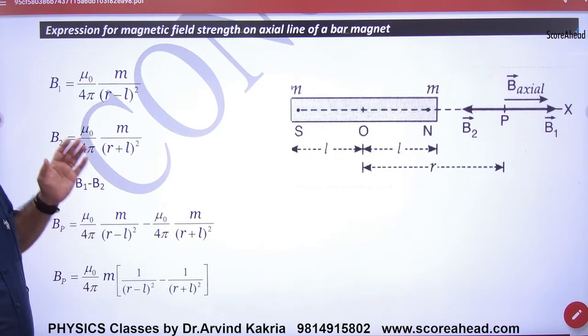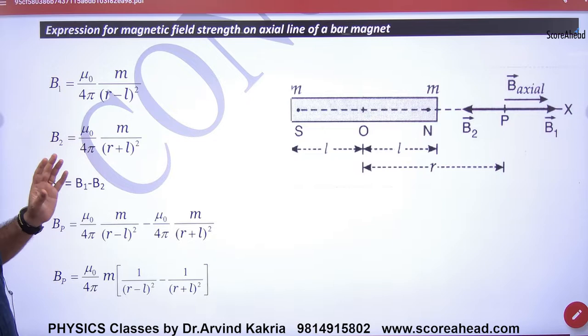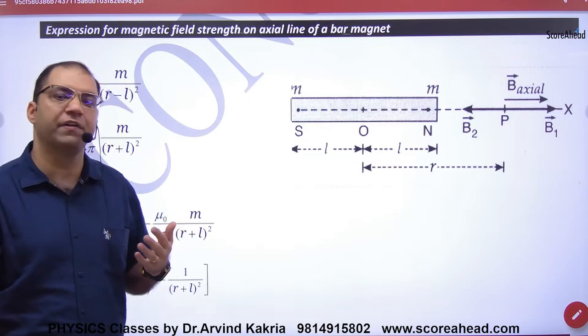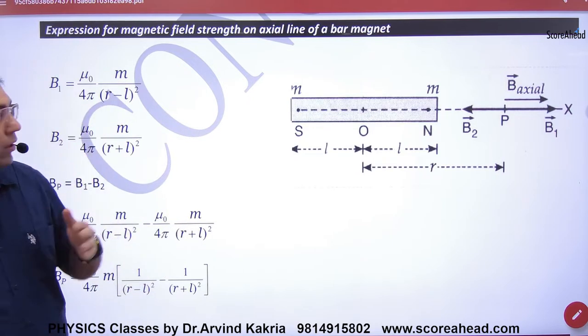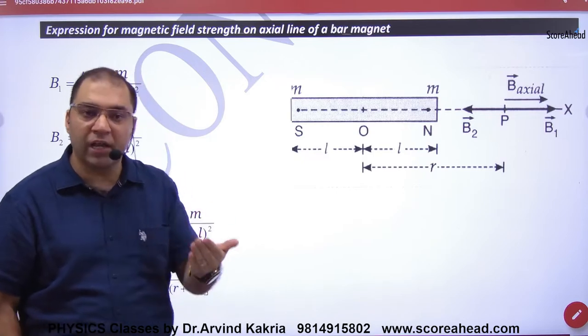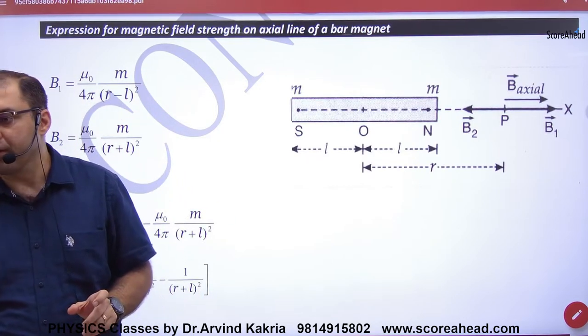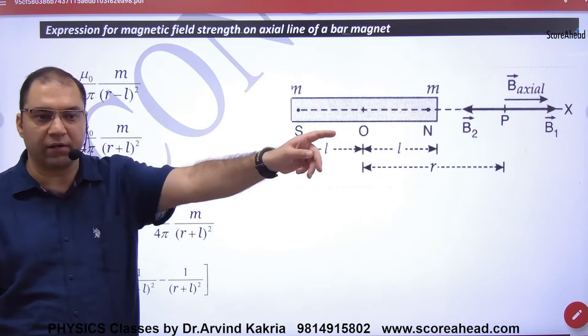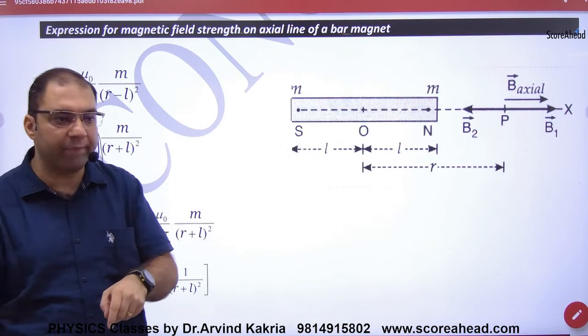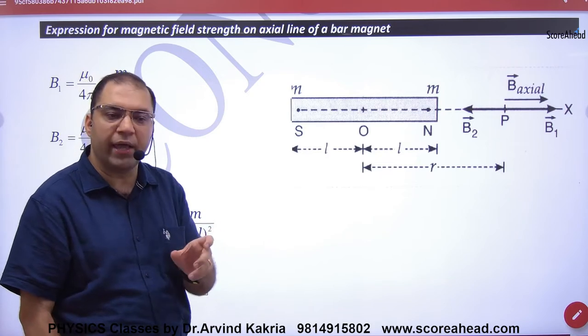Next is the expression for magnetic field strength. What is B on the axial line of a bar magnet? Because bar magnet is a magnetic dipole, and we have dealt with the electric dipole axis. In that way, what will be dealt with on the magnetic dipole axis?